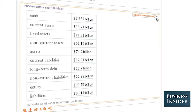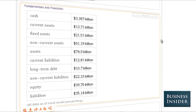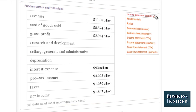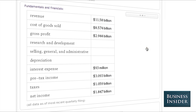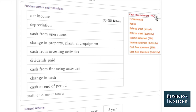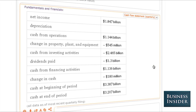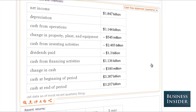You can also go down to the income statement, get the quarterly income statement, any kind of data that you need from that. You can take a look at the cash flow statement, and just get a really good picture of how the company is doing.